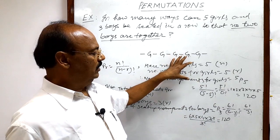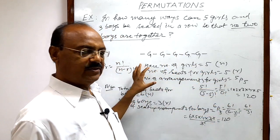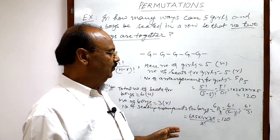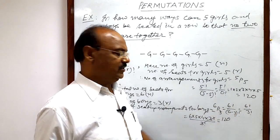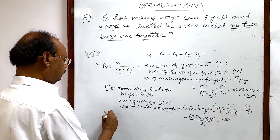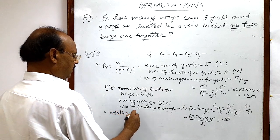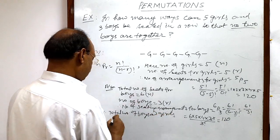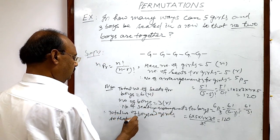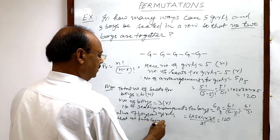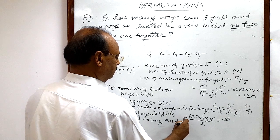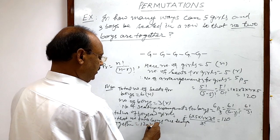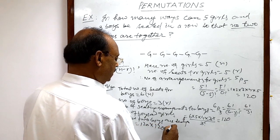So possible number of arrangements for girls is 120 as well as boys is 120. So altogether the whole arrangement will be the multiplication of these two numbers. Therefore, total number of arrangements for boys and girls so that no two boys are sitting together is 120 into 120 equals 14,400.